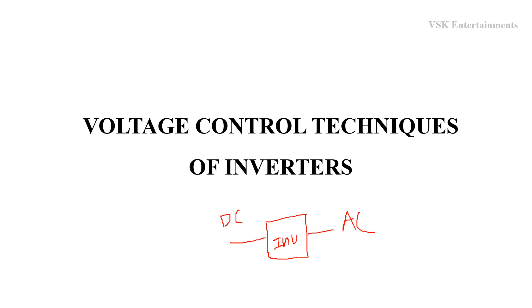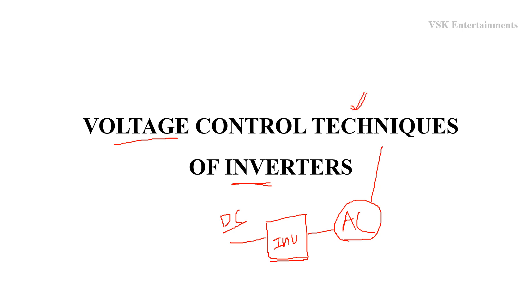In this lecture we are going to discuss about voltage control techniques of inverters. We already know the concept of inverters from previous lectures — that is, an inverter is a circuit which converts DC input voltage to AC output voltage. This AC output voltage can be controlled by using different techniques, which are called voltage control techniques.